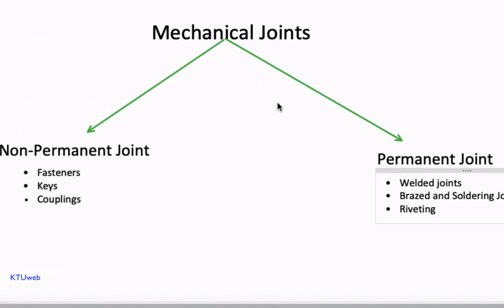Not until long ago, rivet joints were very often used to join structural members permanently. However, significant improvement in welding and bolted joints has constrained the use of these joints. Even then, rivets are used in structures, ship bodies, bridges, tanks, and shells wherever high joint strength is required.